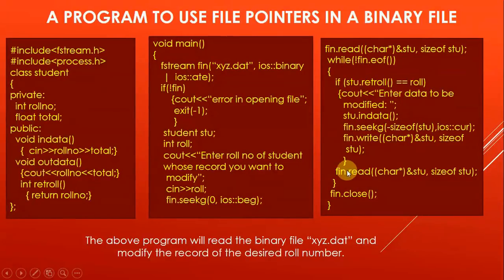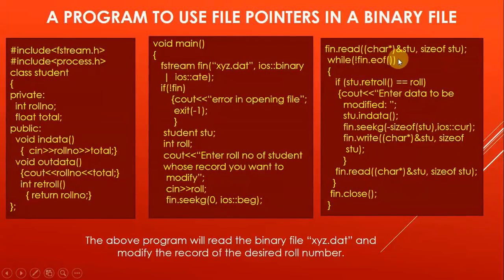If the roll numbers do not match, the next record is read. The loop continues until the end of file is reached, and then the file is closed.